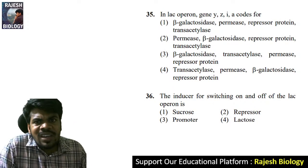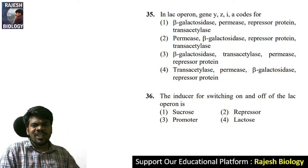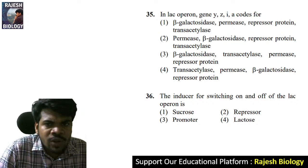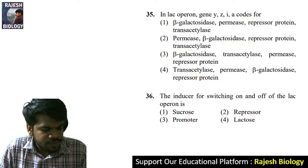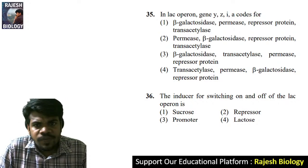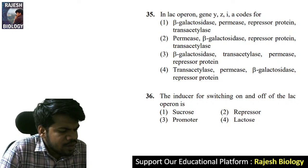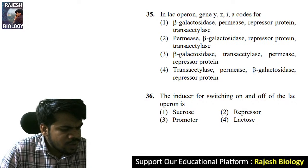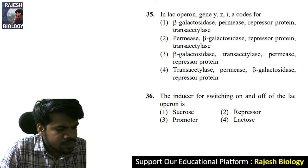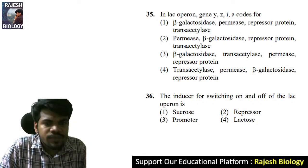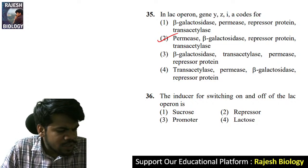Question 35: in lac operon — genes Y, Z, I, and A code for what? Y codes for permease, Z codes for beta-galactosidase, I is the regulatory gene, and A codes for transacetylase. This is a very important repeated question. The right answer is option two. Jnaneshwari, very good.